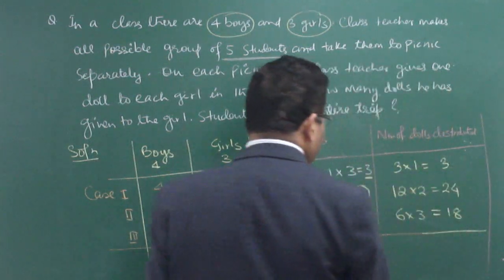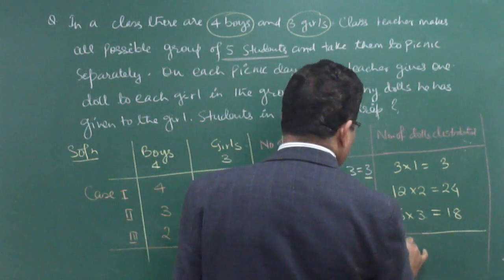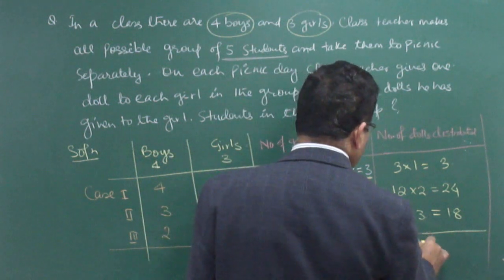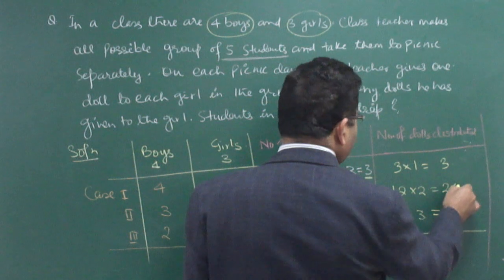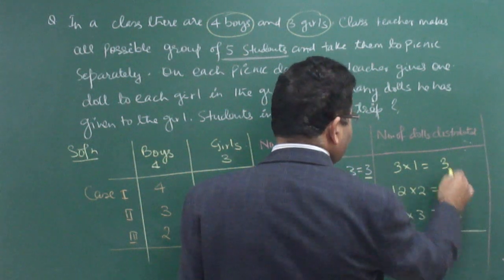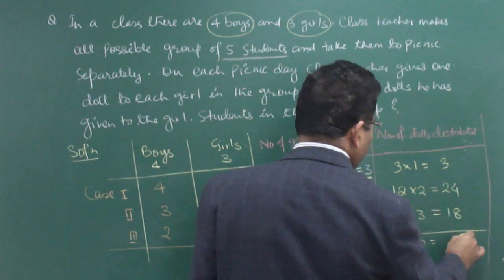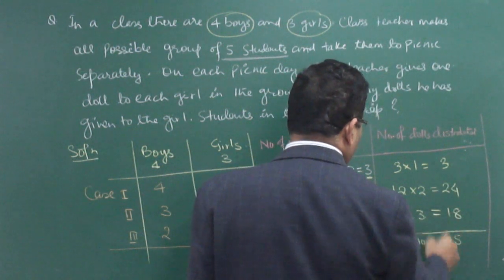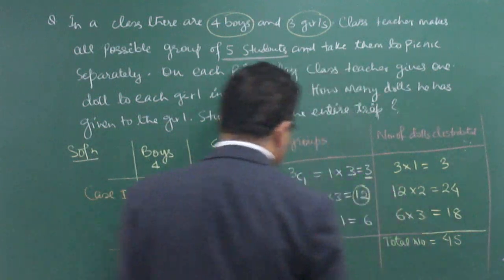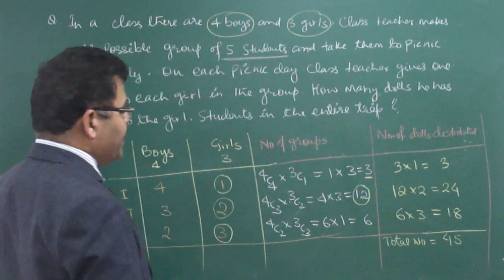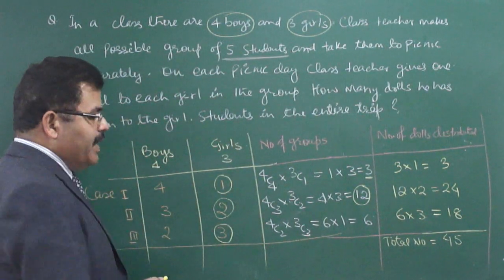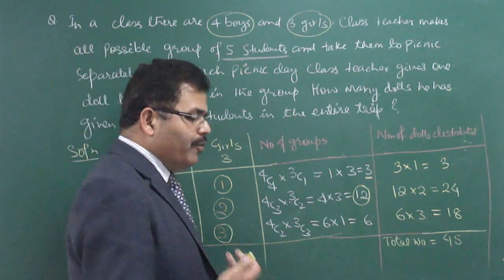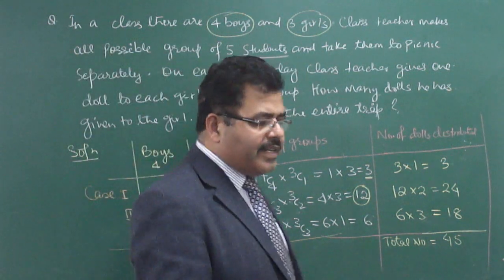So the total number of dolls distributed is 3 + 24 + 18 = 45 dolls to be distributed by the class teacher.